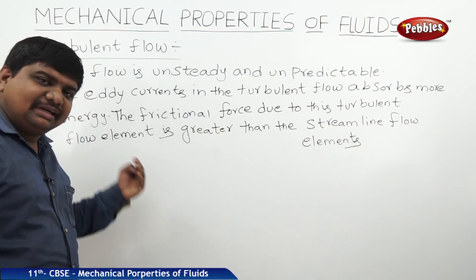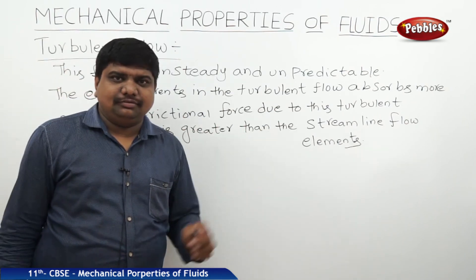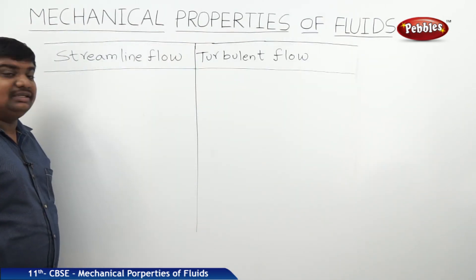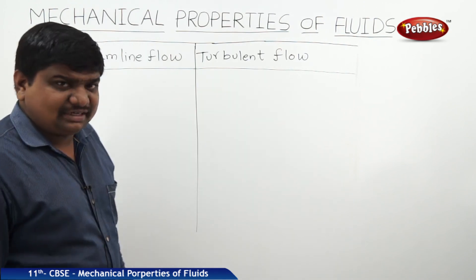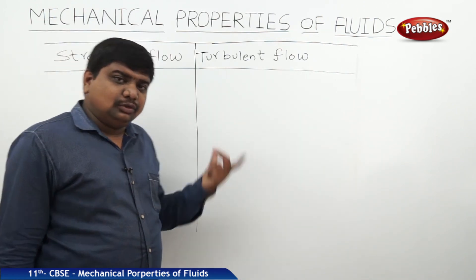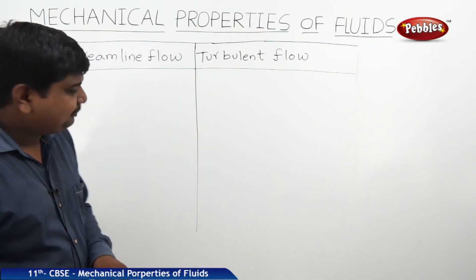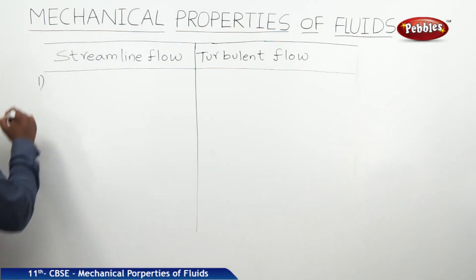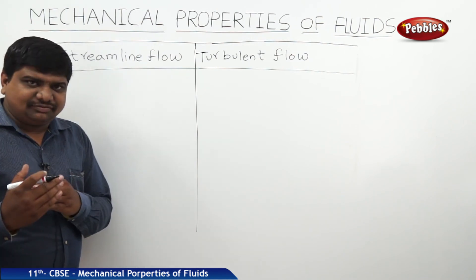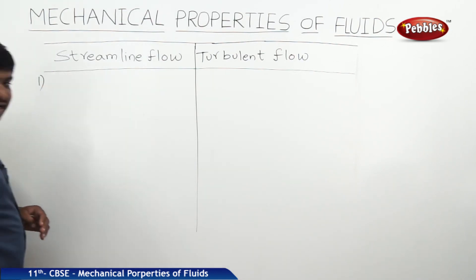Now we will discuss the differences between streamline flow and turbulent flow. There are three major differences. The first point is that the velocity of each and every element of the fluid is constant throughout the motion in the case of streamline flow.